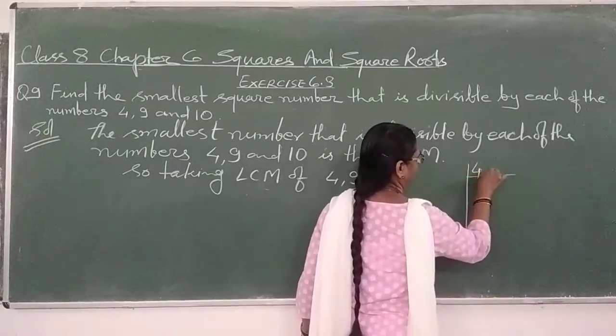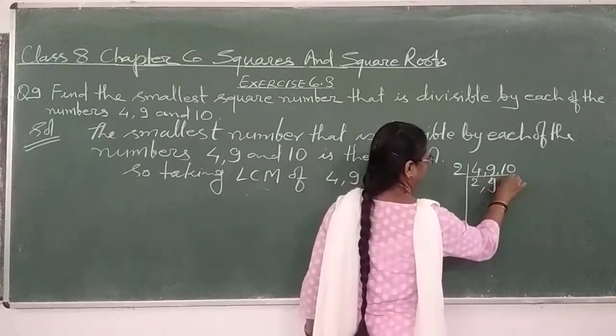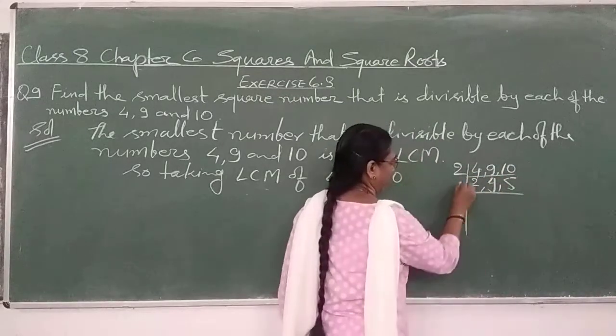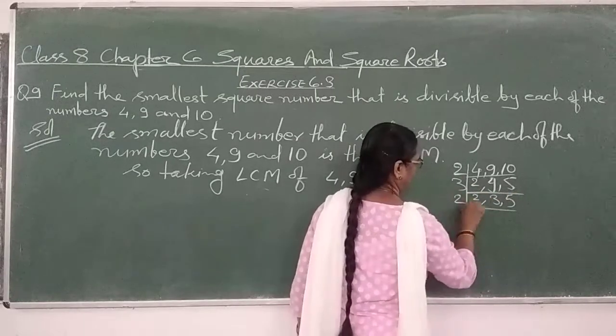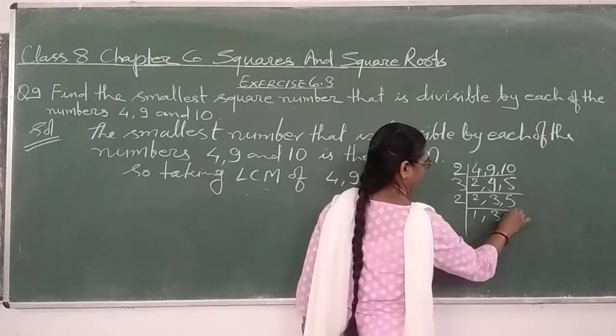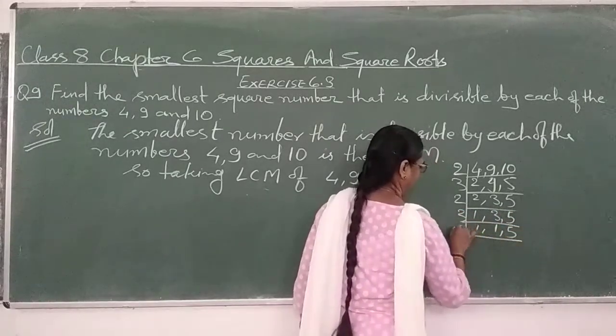4, 9, 10. 2, 2, 2, 5, 10. 3, 3 is a 2, 1. 3, 1 is a 5, 1 is a.